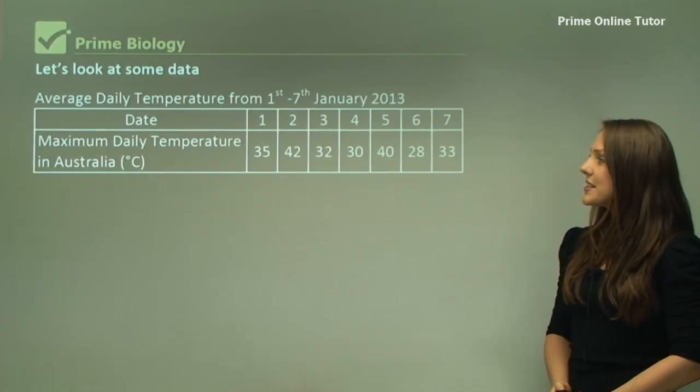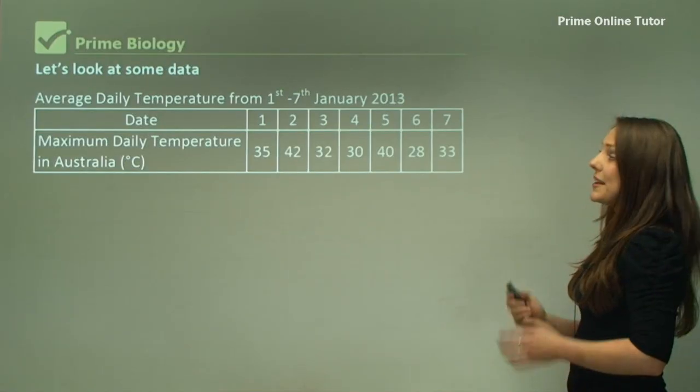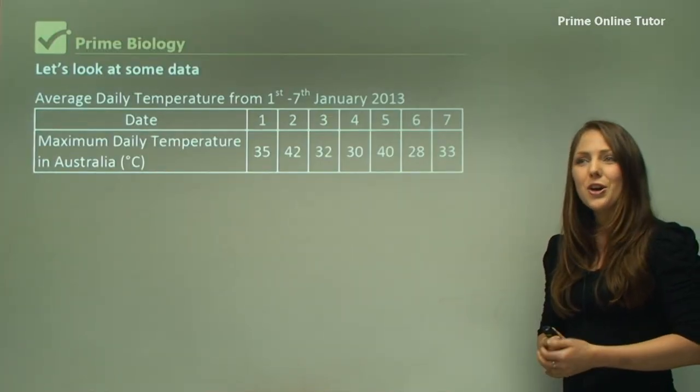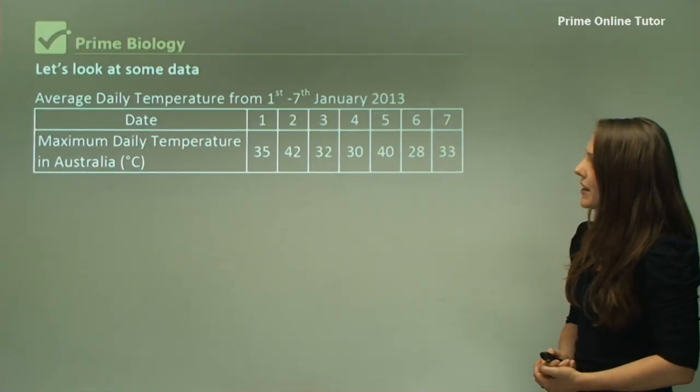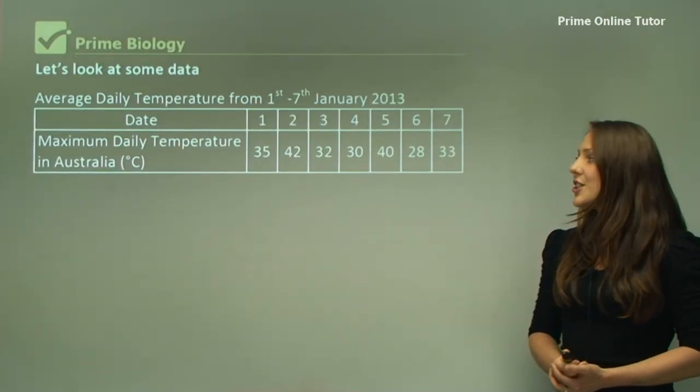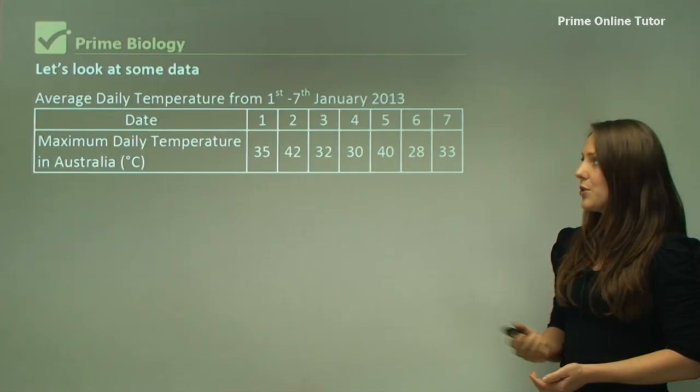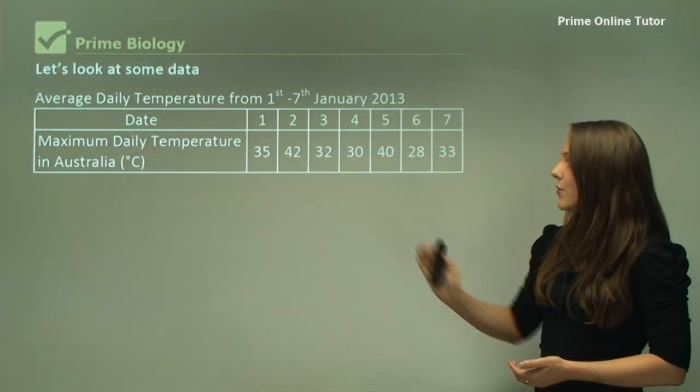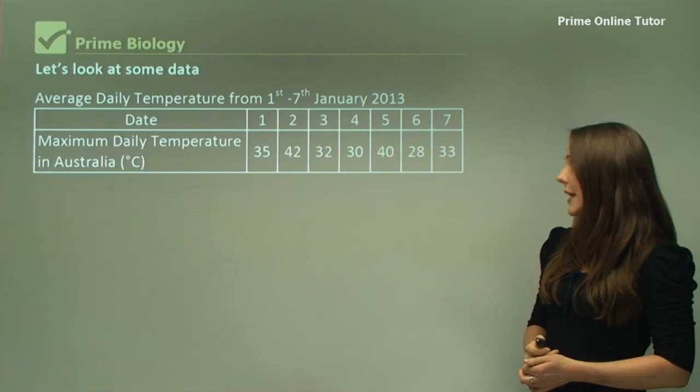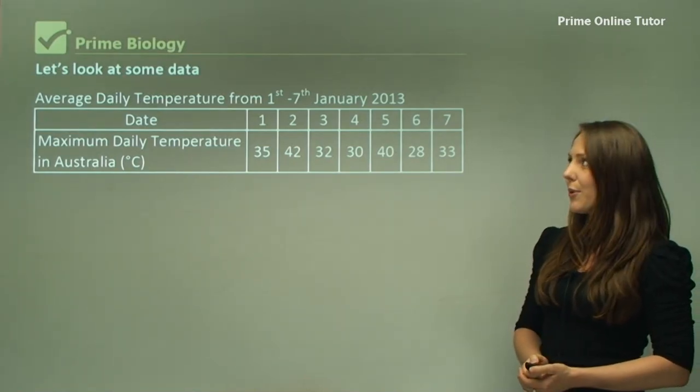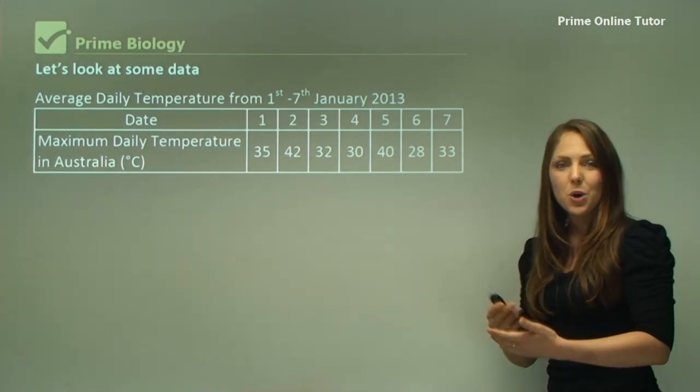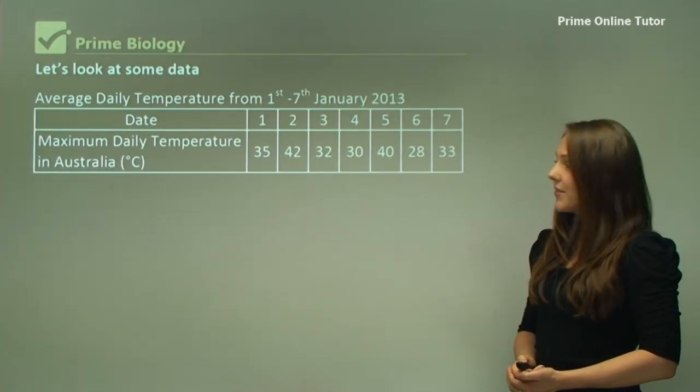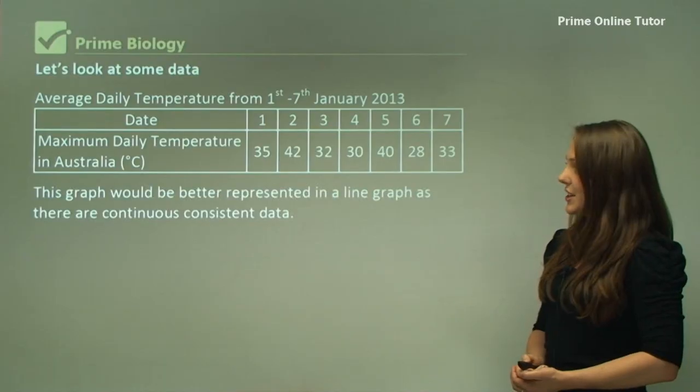Let's look at some data. This is made-up data, but typical values of summer in Australia. From the 1st to the 7th of January 2013, from day 1 to day 7, we've got 35 degrees Celsius, 42, 32, 30, 40, 28, and 33. You can have a go at doing this graph now, you can press pause and I'll continue.